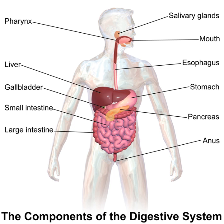Gastrointestinal diseases refer to diseases involving the gastrointestinal tract, namely the esophagus, stomach, small intestine, large intestine and rectum, and the accessory organs of digestion: the liver, gallbladder, and pancreas.